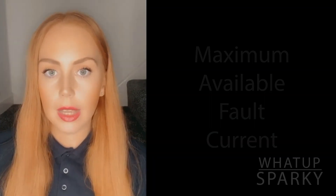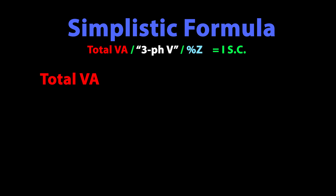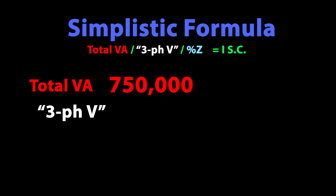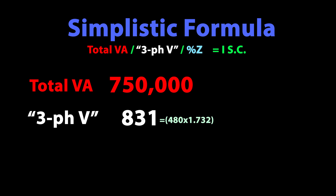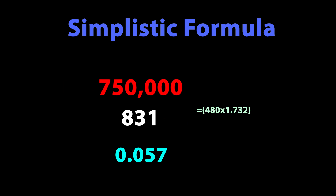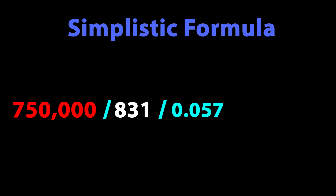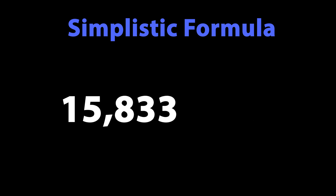For this transformer, here's the formula for maximum available fault current — the maximum let-through. It's actually very simple. For the three-phase formula we need three numbers: first, total VA — in this case 750,000; second, our secondary voltage adjusted for three phase — 831; third, the transformer's impedance — in this case 5.7%, written as 0.057. So the formula is: 750,000 VA ÷ 831 ÷ 0.057, which gives us our conservative maximum available fault current on the secondary side: 15,833 amps. Now that was painless.